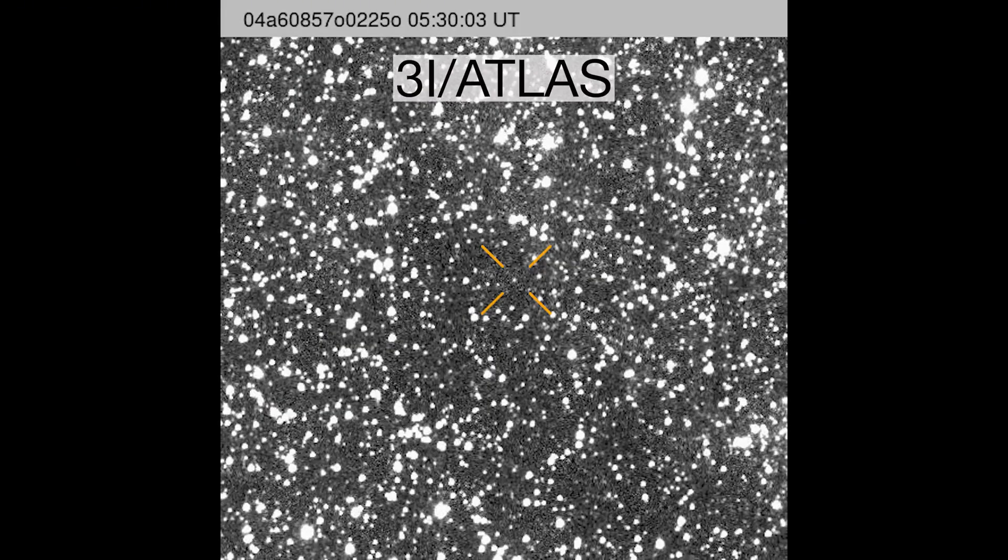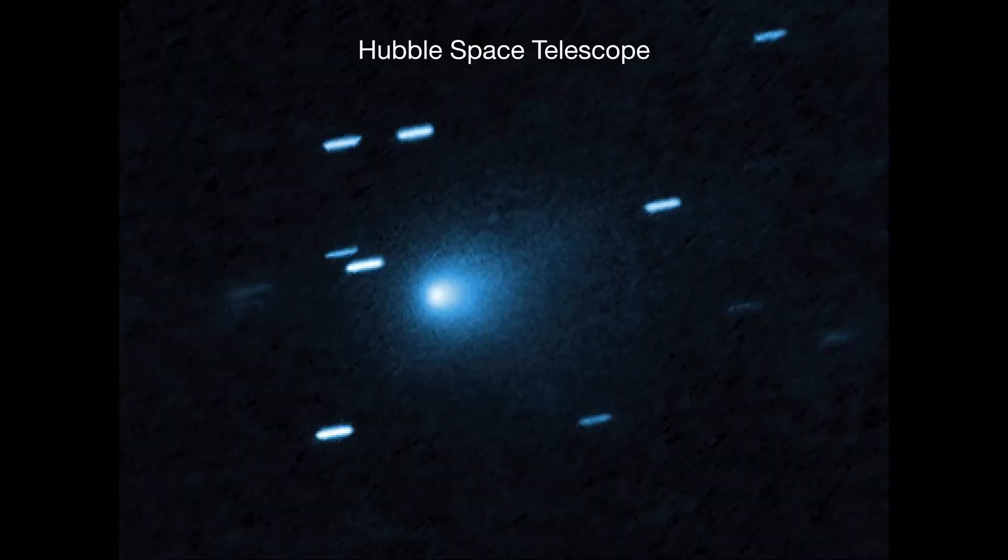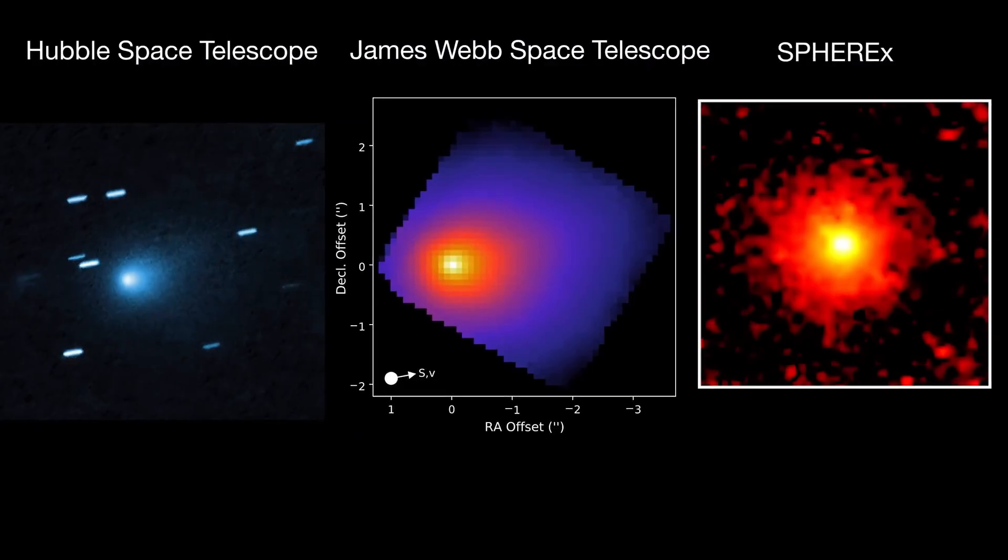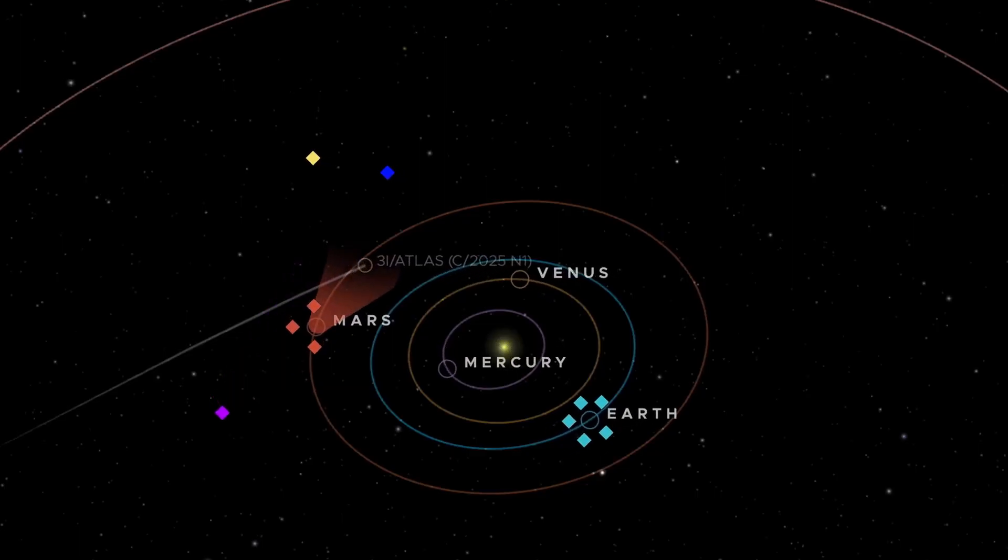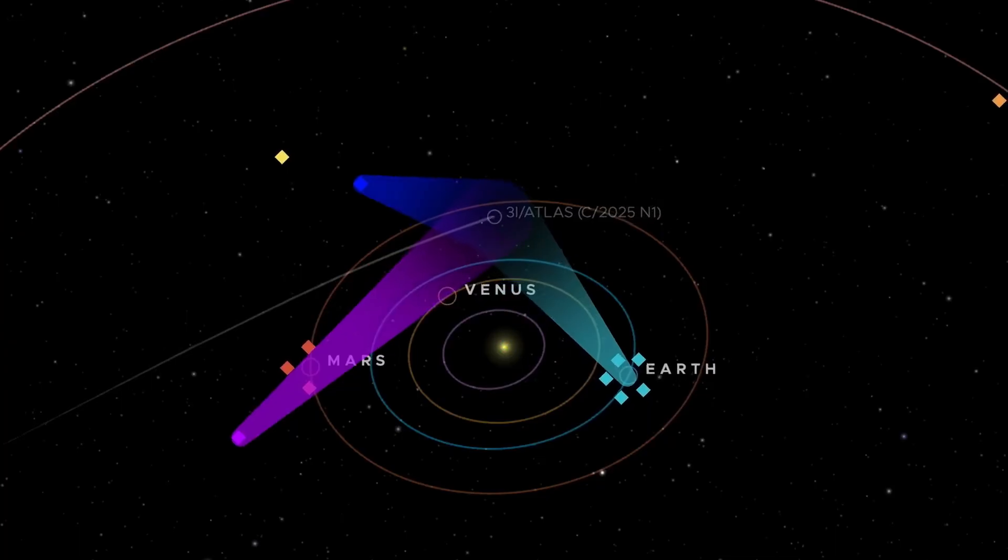The conditions were far from ideal. The comet sat just 14 degrees above the horizon, which is very low. You're looking through thick layers of atmosphere, dealing with distortion, haze, and light pollution. There was also a moon, 61% illuminated, shining about 70 degrees away from the target.